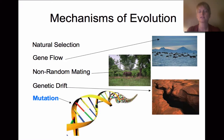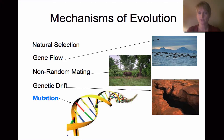Some mechanisms of evolution — things that would cause evolution to happen. Natural selection is one that we've just talked about, and it's a very common mechanism of evolution, but it's not the only one.